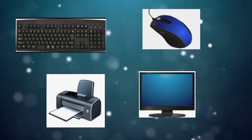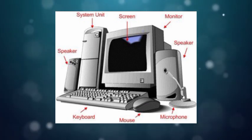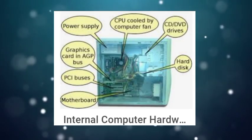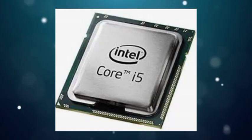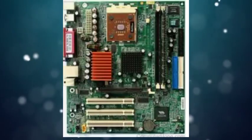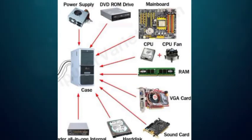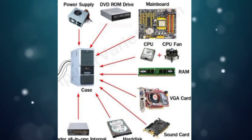Internal hardware are the parts which are inside the CPU cabinet — for example, motherboard, RAM, ROM, and CPU. The small devices which are inside the CPU cabinet and mounted on the motherboard are called internal hardware. So we'll discuss all the physical parts of the computer one by one.